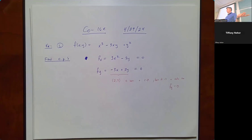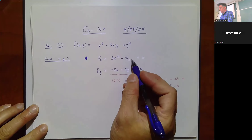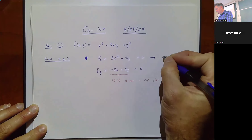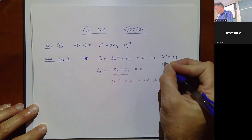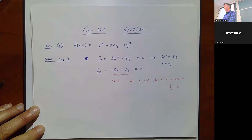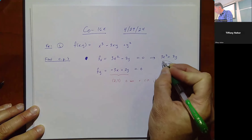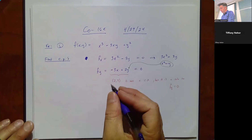When there aren't obvious solutions from factoring, we take one equation, isolate a variable, and plug it into the other. I try to pick the easier option to avoid fractions. From the first equation, 3x² = 3y, so x² = y, meaning y = x². I'll substitute y = x² into the second equation.